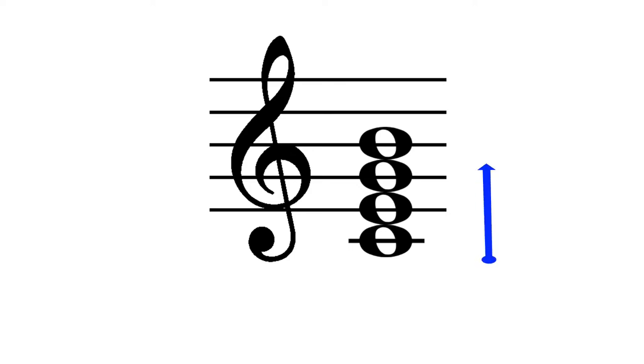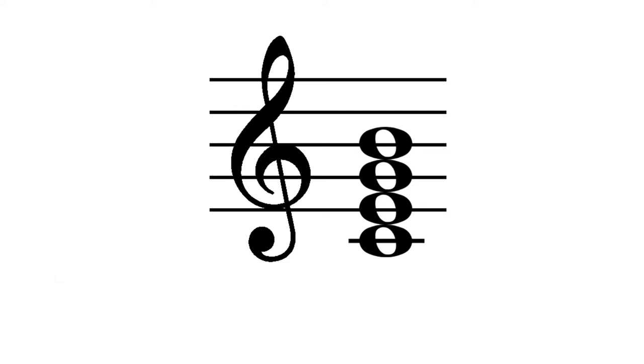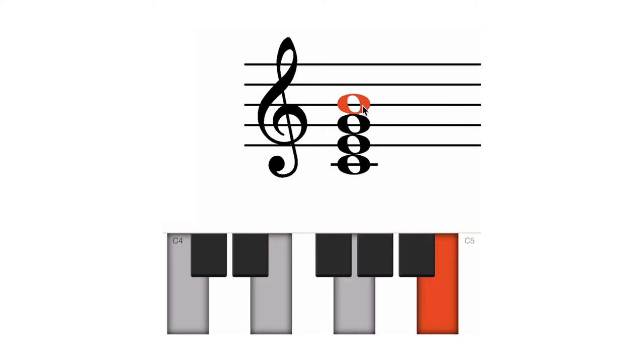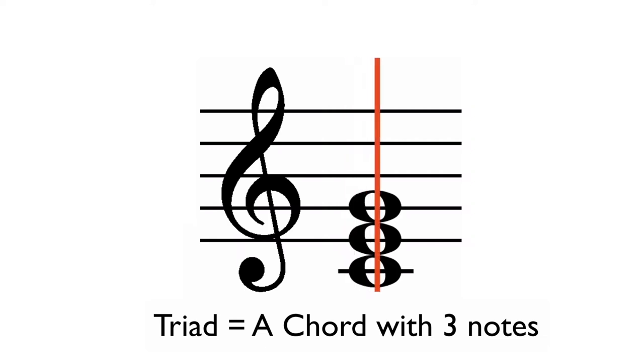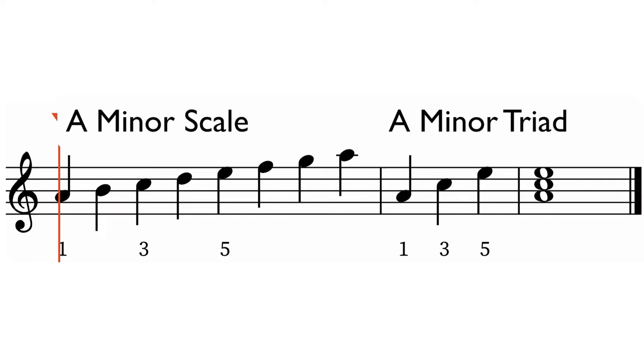A vertical arrangement of notes is called a chord. Just like the scales they come from, chords also have a unique flavor or sound quality. We can form chords on the piano using the same approach of taking every second note of the scale. We call a chord with three notes a triad from tri for three. The triad derives its name from the scale it comes from. So A minor triad comes from A minor scale.